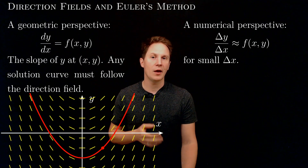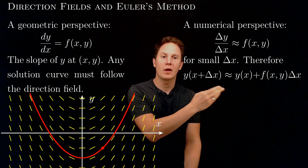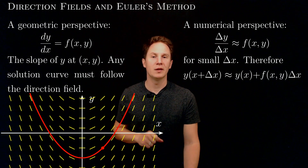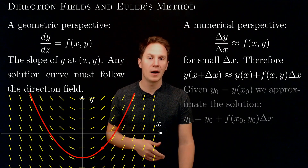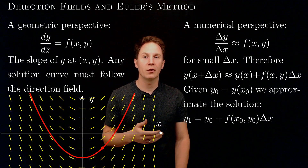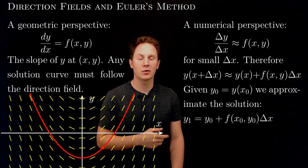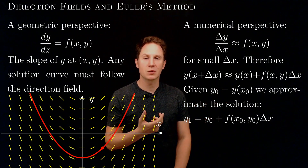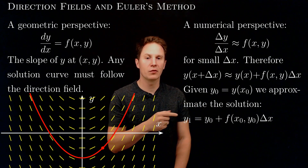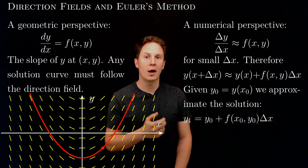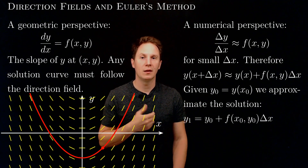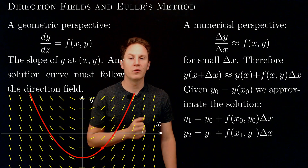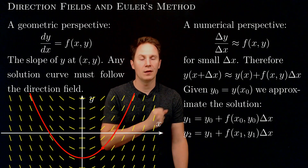Therefore, y at x plus Δx is approximately equal to y(x) plus f(x, y) times Δx. So once we are given an initial value, we can approximate the solution to the differential equation by taking small steps of Δx along the x-axis. The corresponding y-value approximations are given by the right-hand side, going from (x₀, y₀) to (x₁, y₁), where x₁ = x₀ + Δx and y₁ = y₀ + f(x₀, y₀) times Δx. This process can then be iterated to get the next approximation by taking another step of Δx.